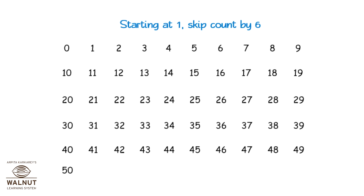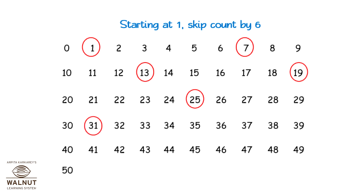Starting at one, skip count by six: one, seven, thirteen, nineteen, twenty-five, thirty-one, thirty-seven, forty-three, and forty-nine.